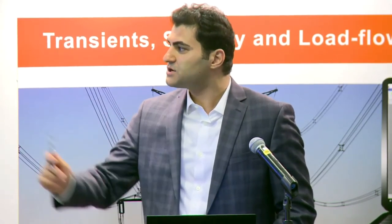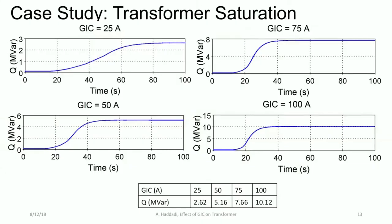Another impact of the increased magnetization current is increased VAR consumption of the transformer. Here are results from a test we performed for a transformer manufacturer, subjecting the transformer to different GIC current levels to see the saturation behavior. Not only are we able to see the steady-state value of VAR, but we can also model the dynamics — the slow build-up of transformer VAR and DC flux. The transformer does not show the same dynamic behavior at different GIC levels, and we are able to calculate that.